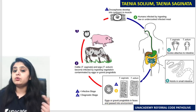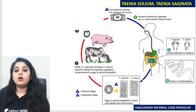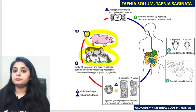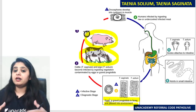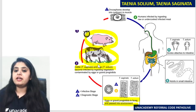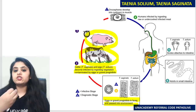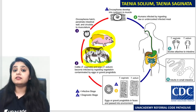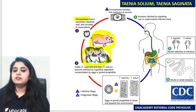Once they are out in the environment, now comes the role of the intermediate host — the role of cattle in case of Taenia saginata and the role of pigs in case of Taenia solium. Because these eggs and proglottids are passed in the environment, the pigs and cattle can ingest them through vegetation. You can see cattle grazing — once they are eating that vegetation, they can ingest these eggs and gravid proglottids. So the infection has reached the respective animal.